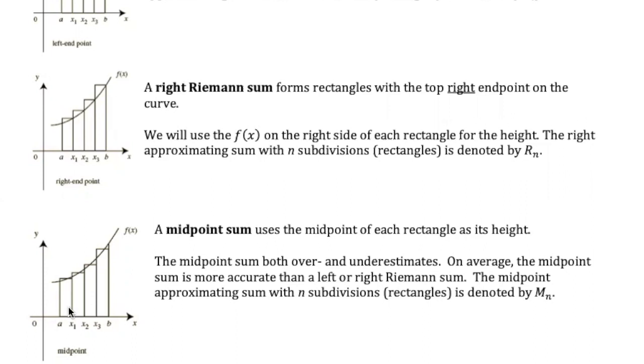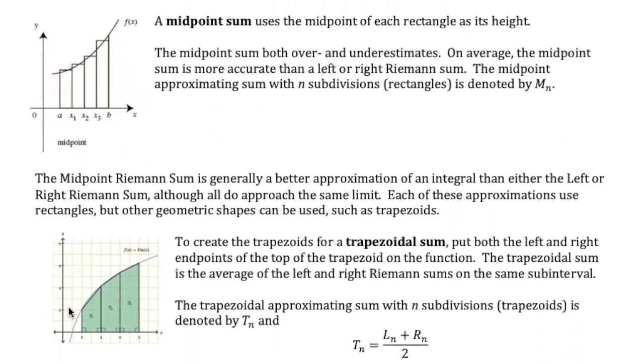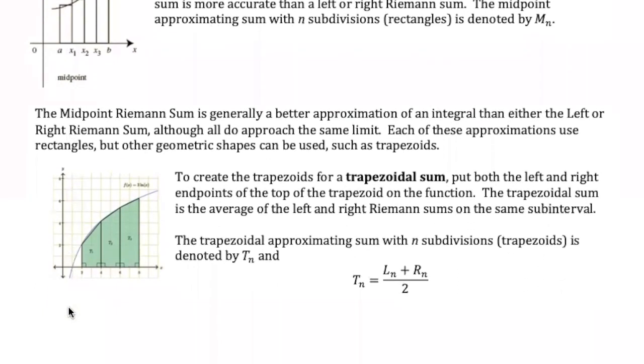Now those are sums using rectangles. There's also another version called a trapezoidal sum, where we make trapezoids. And you can see that does a pretty nice job of hugging the curve. So to make your trapezoid, you put both the left and the right endpoints onto the function to create your trapezoid shape. And the trapezoidal sum is always the average of the left and right Riemann sums on the same sub interval.